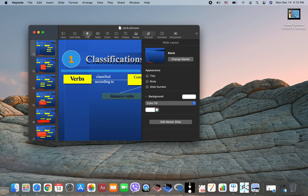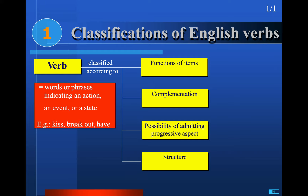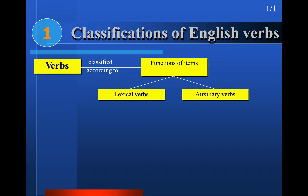In the previous lecture we talked about verb phrase. We classified verbs according to functions of items, according to complementation, according to possibility of admitting progressive aspect, and according to structure of the verb.